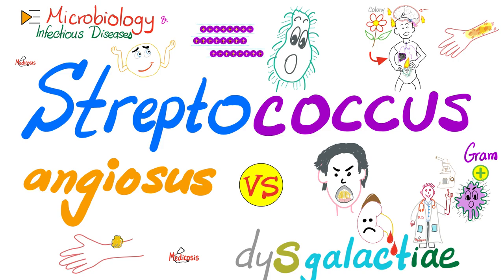Before we get started, just remember that angiosus causes abscess — not pharyngitis. Dysgalactiae causes pharyngitis, not abscesses. This pharyngitis could be later complicated with post-streptococcal glomerulonephritis.